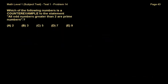Problem number 14 asks: which of the following numbers is a counterexample to the statement 'all odd numbers greater than 2 are prime numbers'? Remember, prime numbers are numbers divisible only by 1 and themselves. So what you're looking for is a counterexample — an example that's going to disprove this statement and make it false.